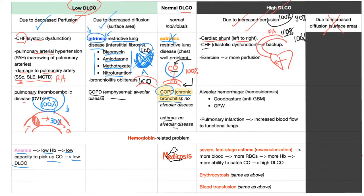CHF due to diastolic dysfunction: the left atrium cannot receive blood from the lung, so blood pools in the lung, increasing lung perfusion and increasing the DLCO. Exercise also leads to more perfusion, so if you have a professional athlete — or if someone is exercising right now — they are increasing the perfusion to their lungs, increasing the DLCO.